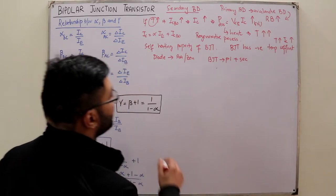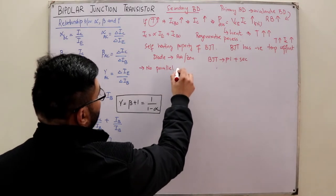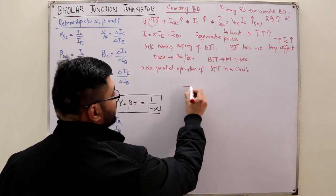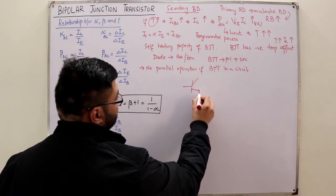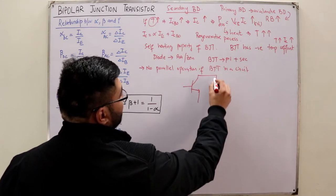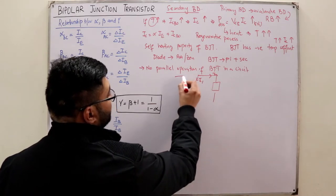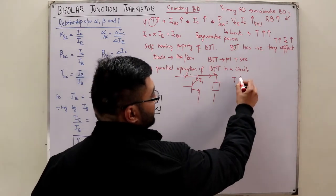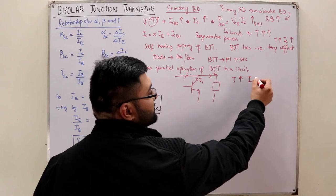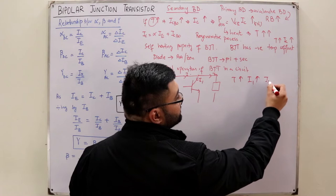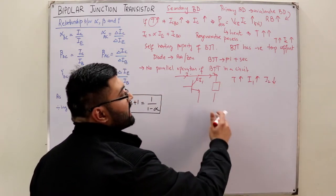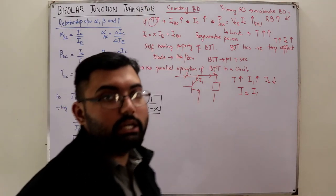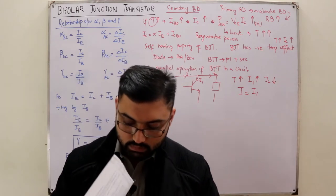BJTs should not be operated in parallel in a circuit. If two BJTs are connected in parallel across a load — with load current I2 and BJT current I1, total current I — then if temperature increases, the collector current I1 increases, causing I2 to decrease. Eventually nearly all current flows through the BJT and none through the load, and the BJT gets damaged.